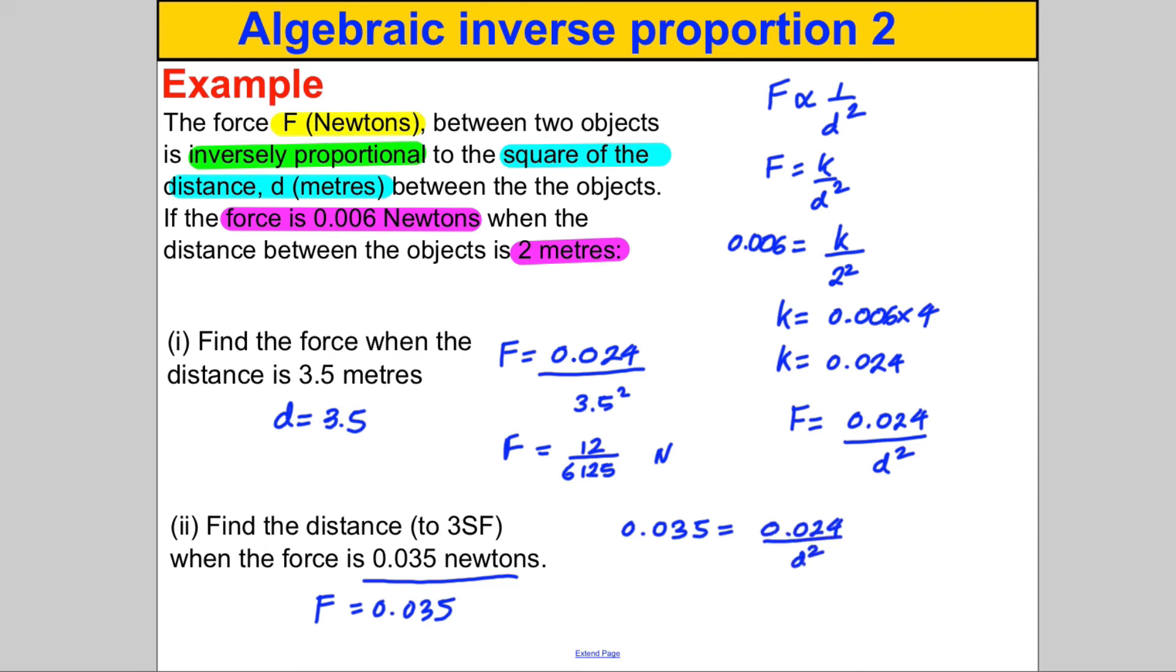Rearranging, D squared must therefore be equal to 0.024 divided by 0.035. And if you work that out, well, why don't we just go straight ahead. Imagine you're working down the page. D therefore must be the square root of this answer because we must find D.